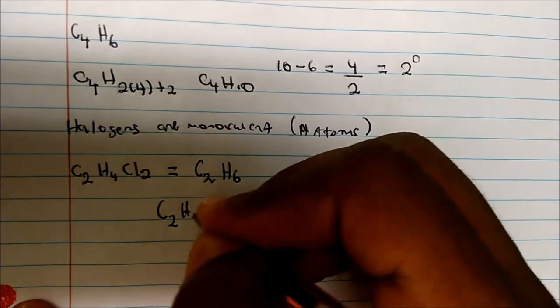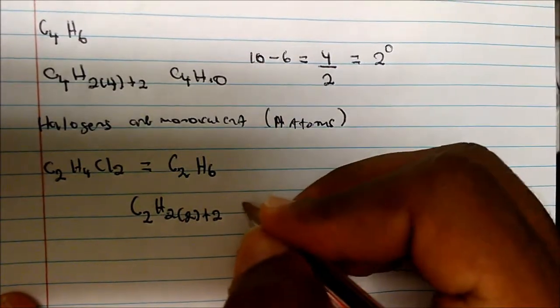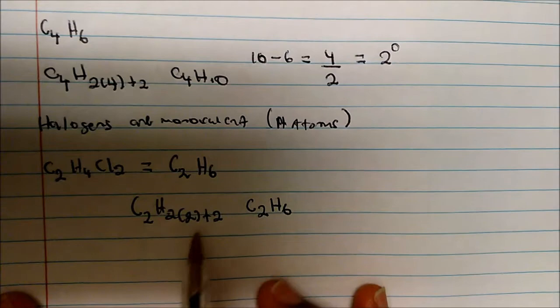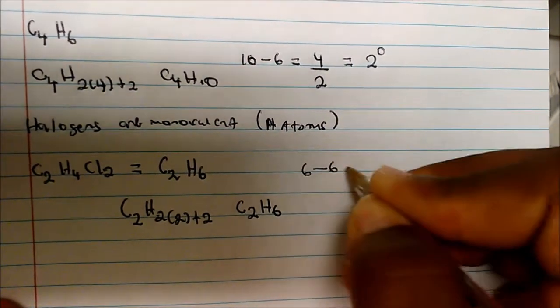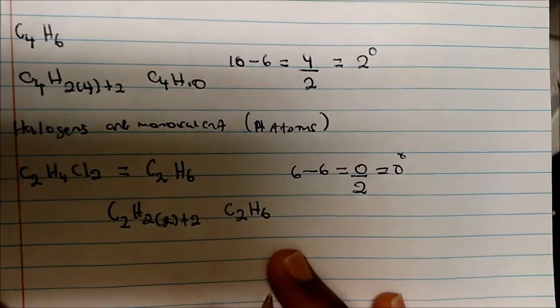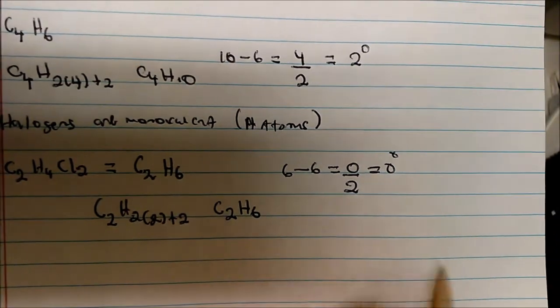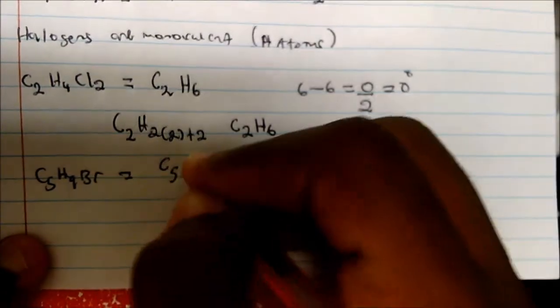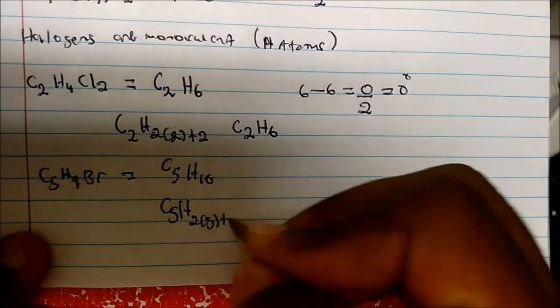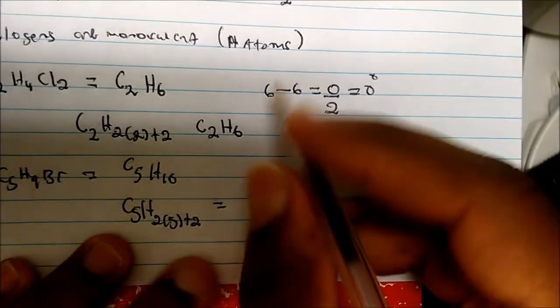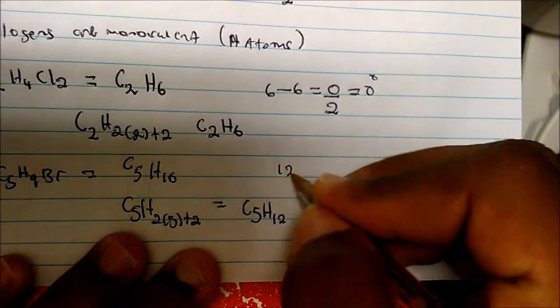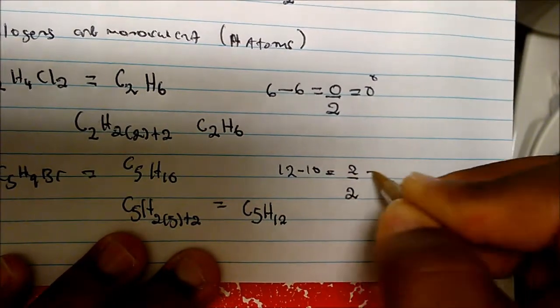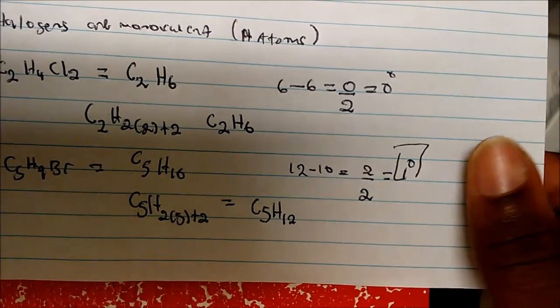For C2H4Cl2, rewritten as C2H6: the saturated formula is also C2H6. Subtracting 6 from 6 gives 0, divided by 2 gives 0 degrees of unsaturation. For C5H9Br, treat the bromine as hydrogen to get C5H10. The saturated formula is C5H12. Subtracting: 12 minus 10 equals 2, divided by 2 gives 1 degree of unsaturation.